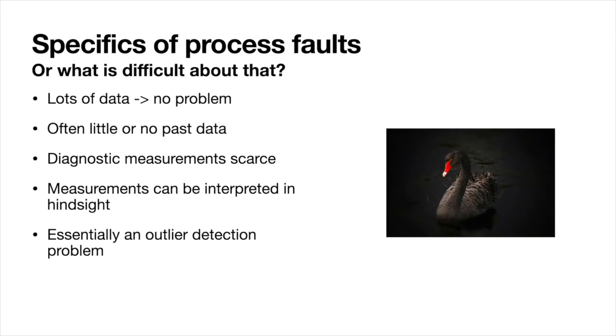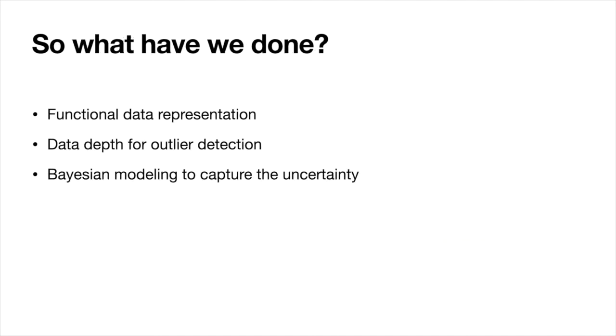So, how can we think about process faults? If we have lots of data and we have very well understood and measured fault, there is no problem. We can use any kind of method in order to solve the problem. However, we often have very little or no faulty data of such situations. Diagnostic measurements, as mentioned before, are very scarce. And process measurements that could predict such situation can be interpreted in hindsight, not as predictive options. So, we have essentially an outlier detection problem, which can be in some ways considered a black swan using popular nomenclature.